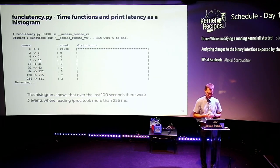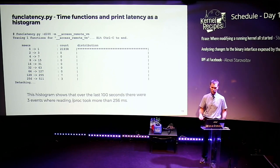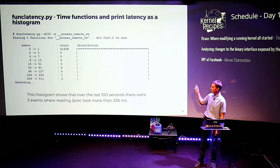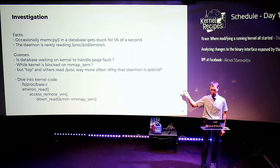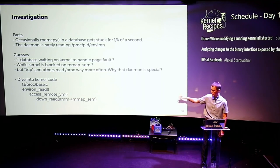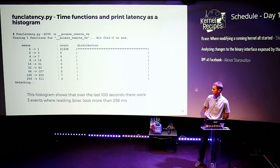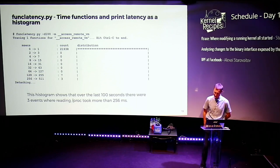Before we could say what exactly was happening, we needed to check whether these guesses were correct. For this, we used this func_latency tool — a BPF-based tool, part of the BCC toolchain. We have it installed on every server and most folks know how to use it. We said: for the next hundred seconds, I want a histogram of the AccessRemoteVM function. We looked at it because when user space is reading proc environ, it goes through AccessRemoteVM and that's where the semaphore will be taken. We indeed saw that over the last hundred seconds there were three cases where it was more than a quarter of a second — ten cases total where something odd was happening.